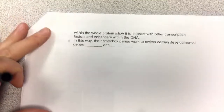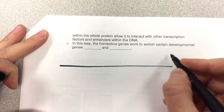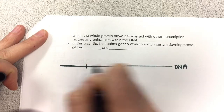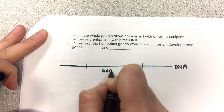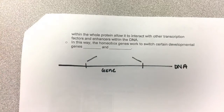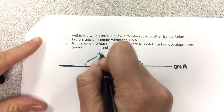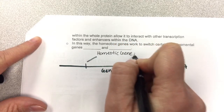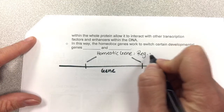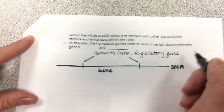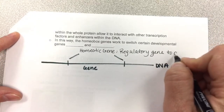So let's say here, this is your DNA, and this is your gene. And let's say this gene is a homeotic gene. So a homeotic gene is a regulatory gene to determine pattern formation.